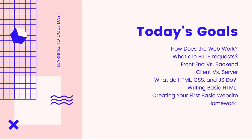Today we're starting from square one. We need to talk about how the web works — that will be the first half of this video. We're going to start with a high-level, big picture of how the web works and what HTML, CSS, JavaScript, front-end, back-end, and HTTP requests mean. Then we'll dive into HTML. By the end, you'll be writing some basic HTML. I'll give you some homework — most of your learning will come from actually doing stuff. Tomorrow we'll continue with HTML, then eventually CSS and onwards.